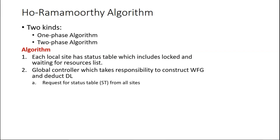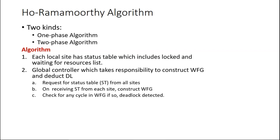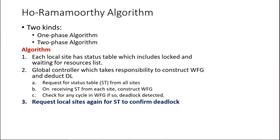The global controller sends a request message for the status table to all the other sites. On receiving this request message, every site will respond by sending its own status table to the global controller. On receiving the status tables, the controller will construct a wait-for graph. Once the wait-for graph is constructed, the controller will check whether any cycle exists. If so, the deadlock is detected. Otherwise, if there is no cycle, then there is no deadlock.